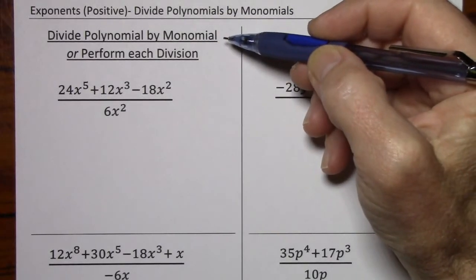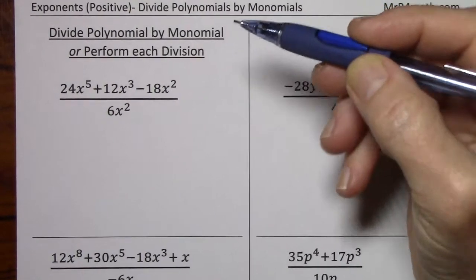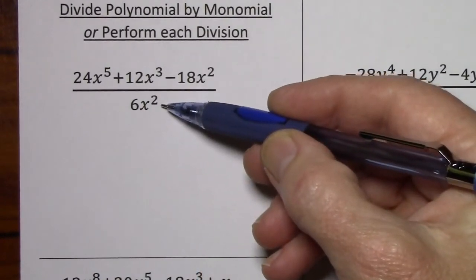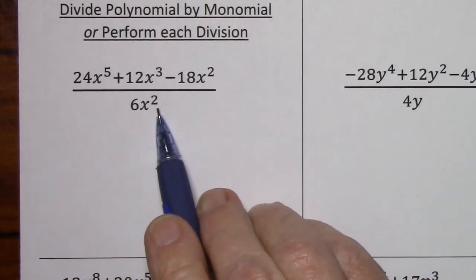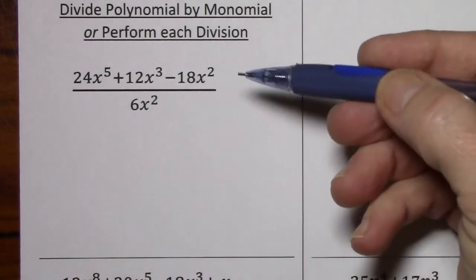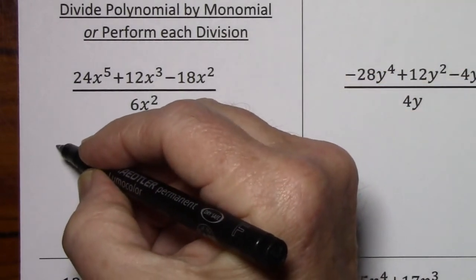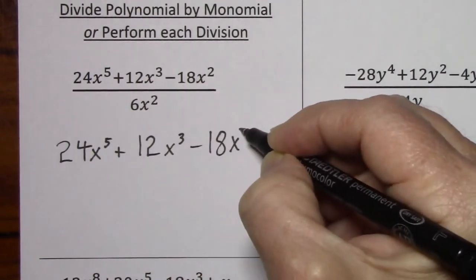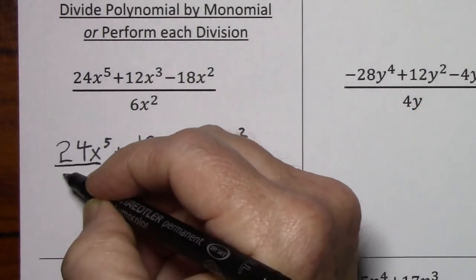You could be asked to divide a polynomial by a monomial, or they might simply say perform each division. The polynomial is what's written in the numerator, and the monomial is what we have in the denominator. Because the fraction bar is also a grouping symbol, this 6x squared applies to each term in the numerator. So I suggest rewriting the numerator and putting the 6x squared in each denominator.